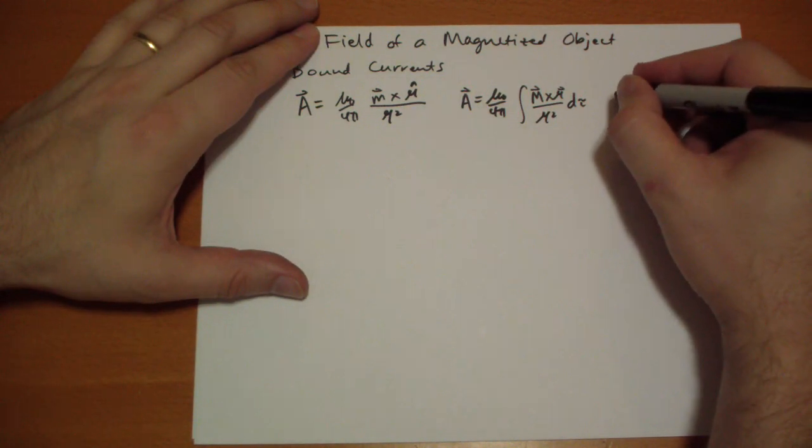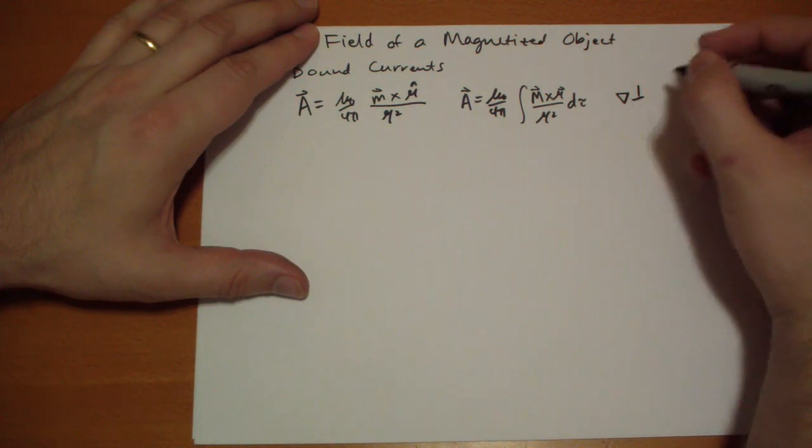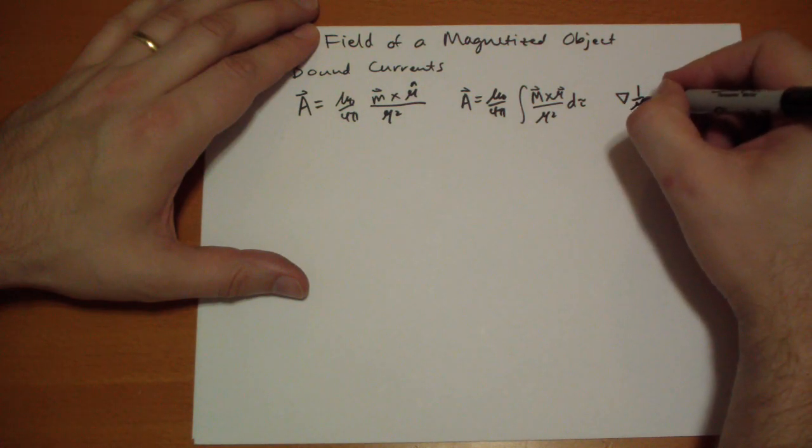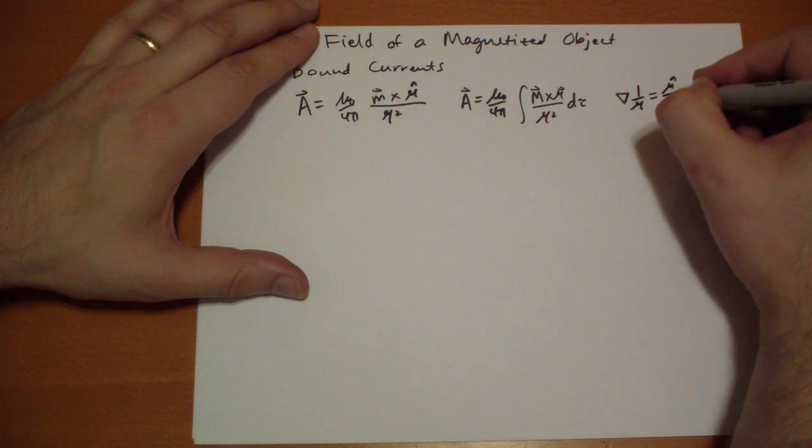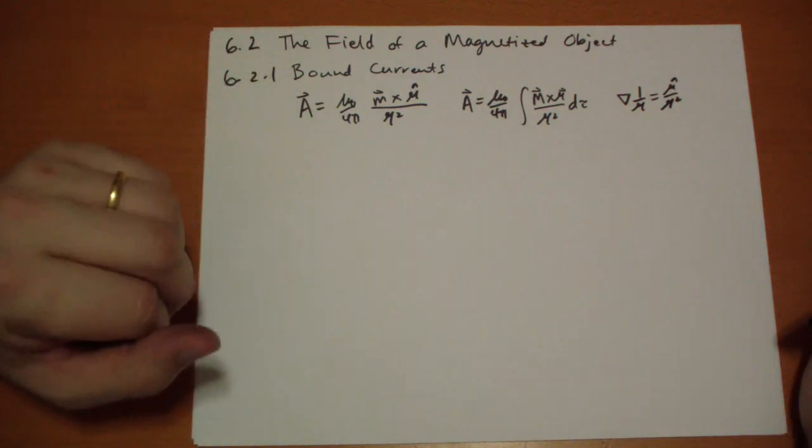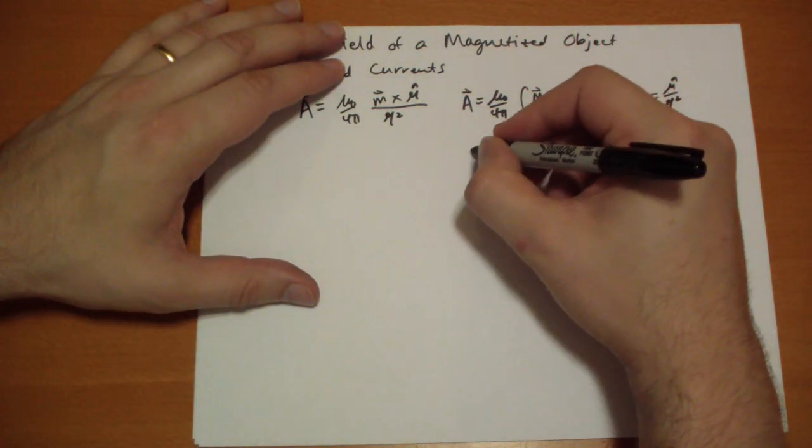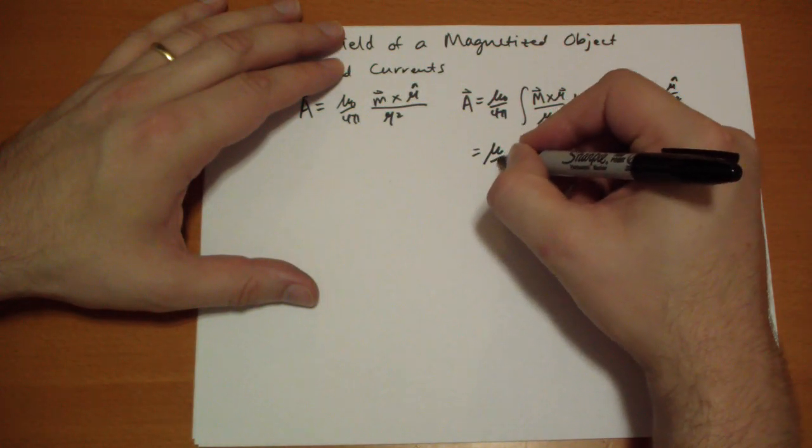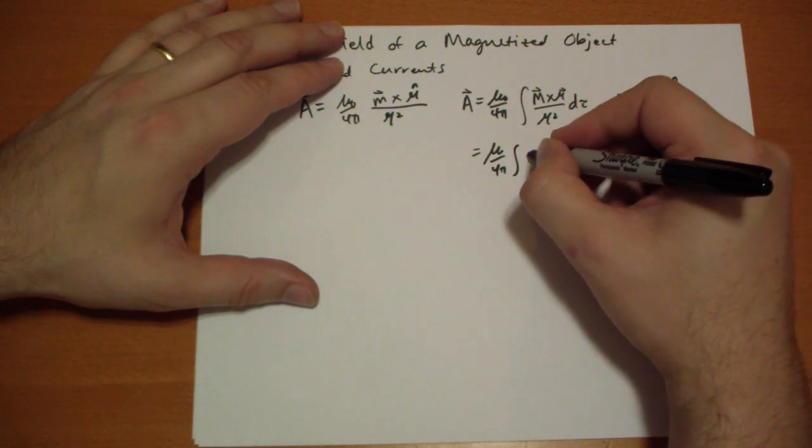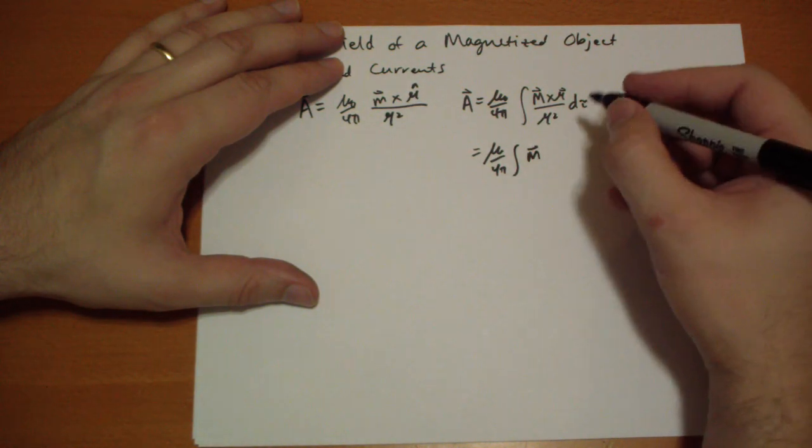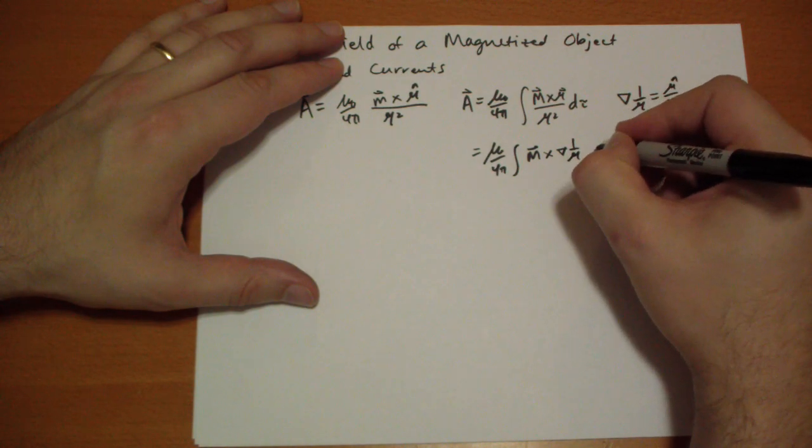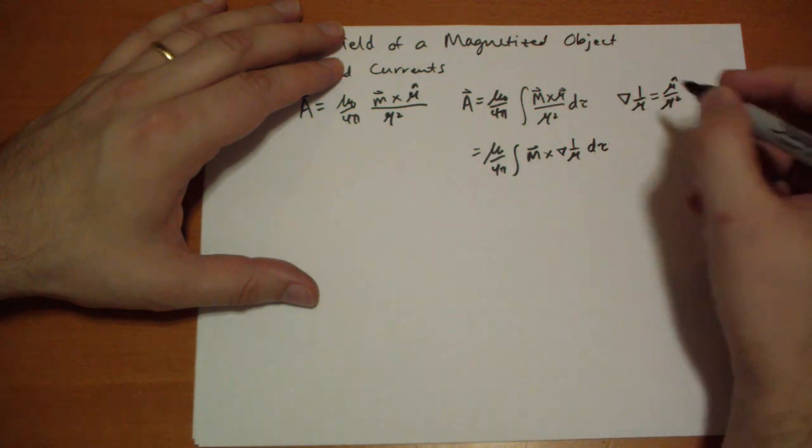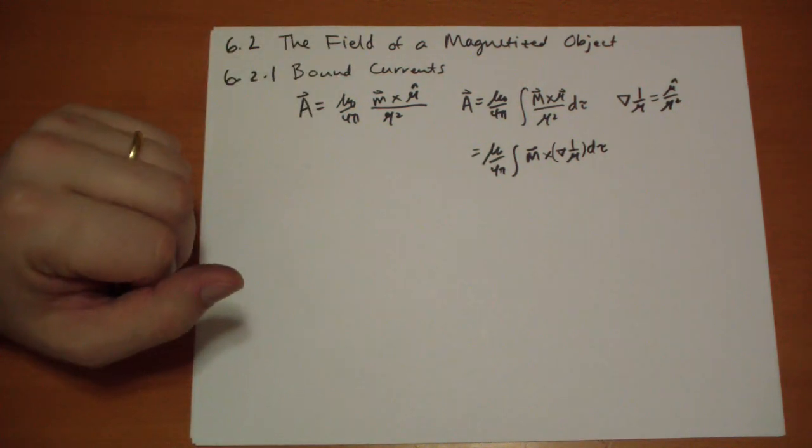But if you recall, there's this curious little property. The gradient of the value 1 over r, not the vector r, the magnitude r, is equal to r-hat over r-squared. Okay? So, plugging this in, we now get that it's mu-naught over 4 pi, the integral of M vector cross the gradient of 1 over r, d-tau. So, let's put this in parentheses there.